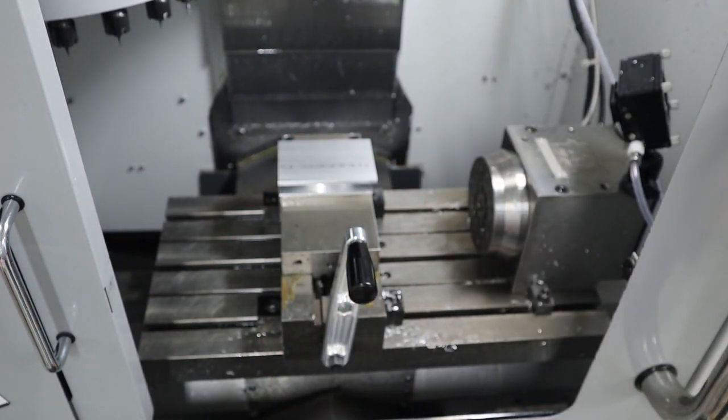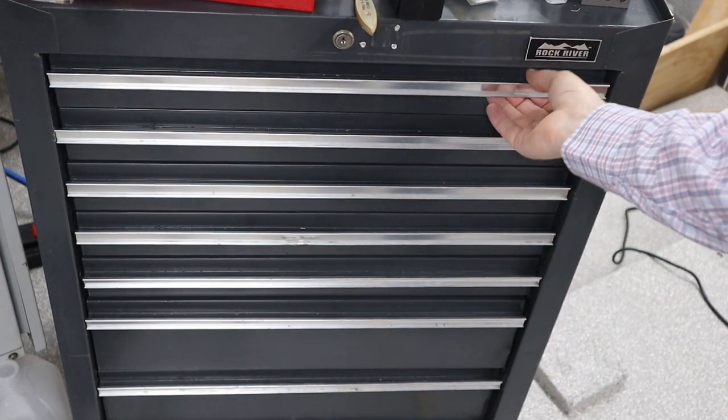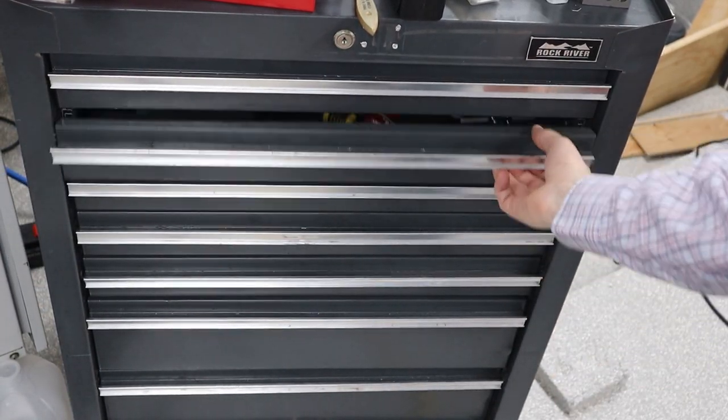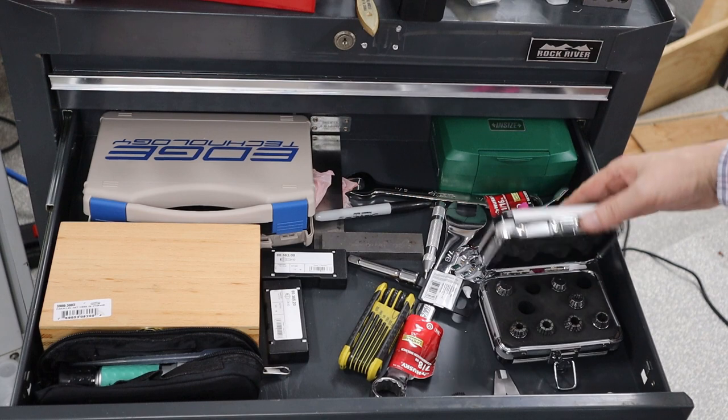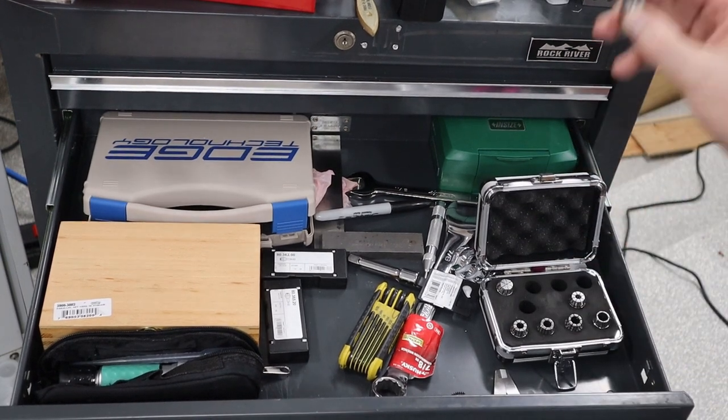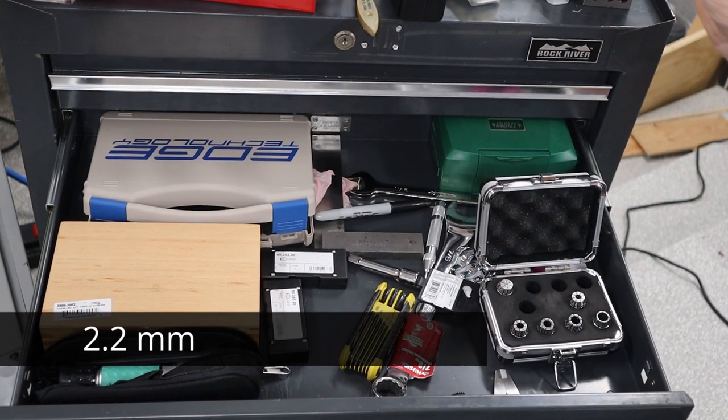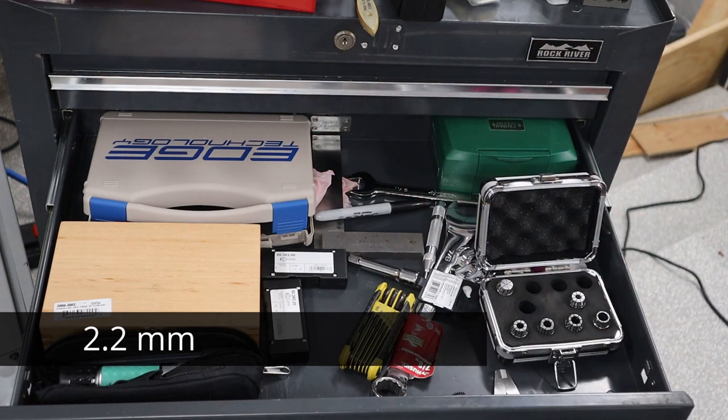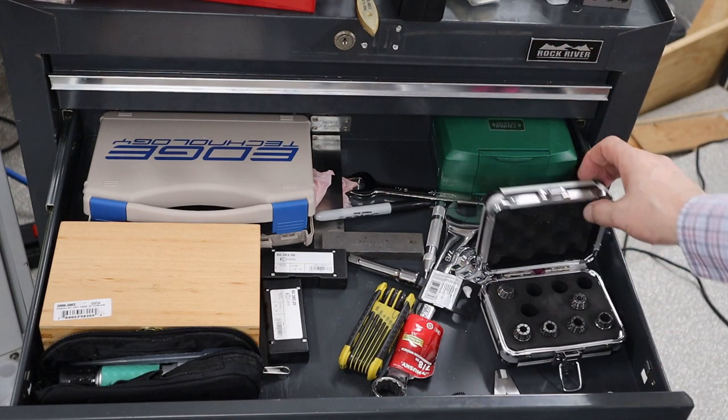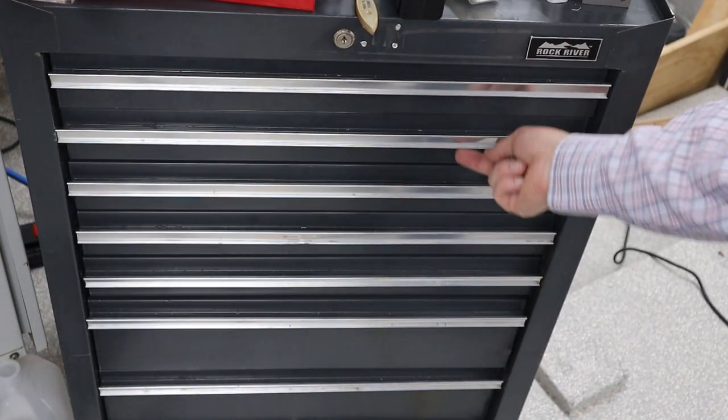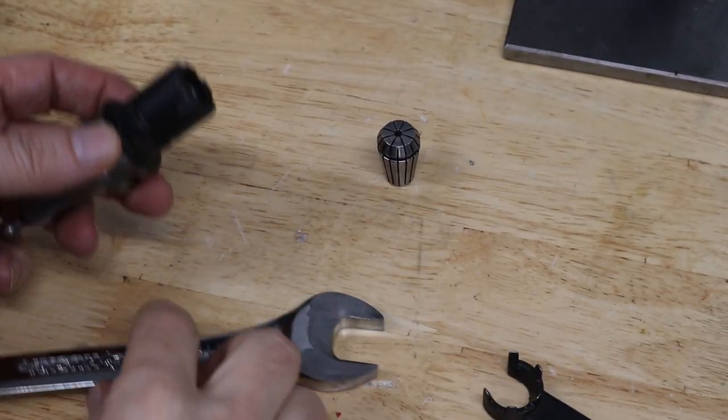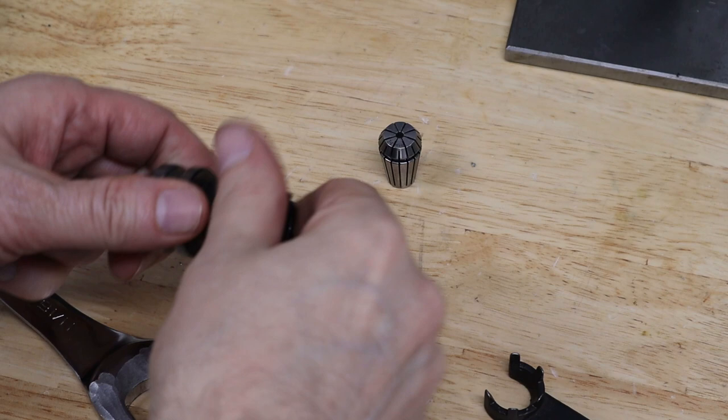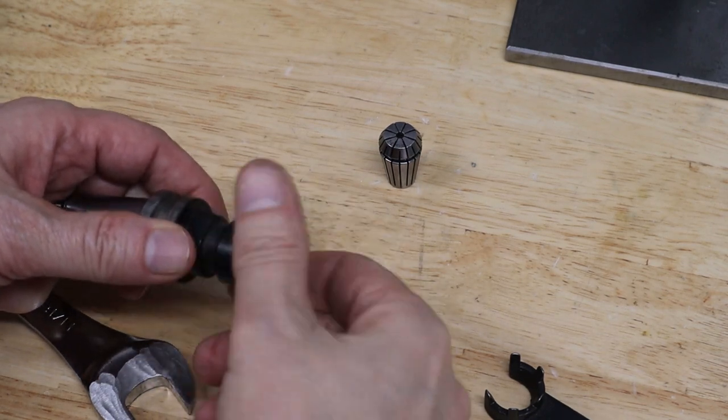That's going to work. I need to add a number 43 drill so I need a collet and I need a 2.2 millimeter. This one here is 3 to 2 so that collet will work perfectly.